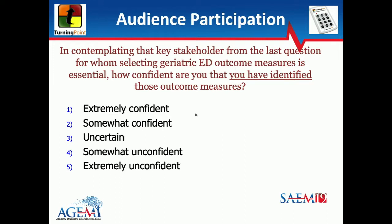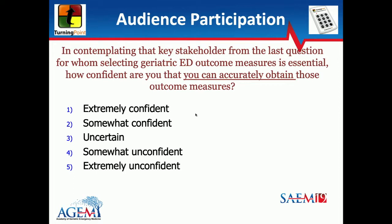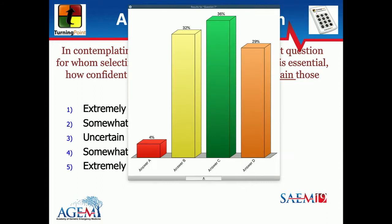Thinking about those key stakeholders and selecting outcome measures: given what we have in the ED today — whether we're using chart review, a research assistant, or some QI process to look at coding and billing — how confident are we that we can accurately measure those outcomes? A nice spread of answers, though I think we're hovering around uncertainty, and there's proof that's true.